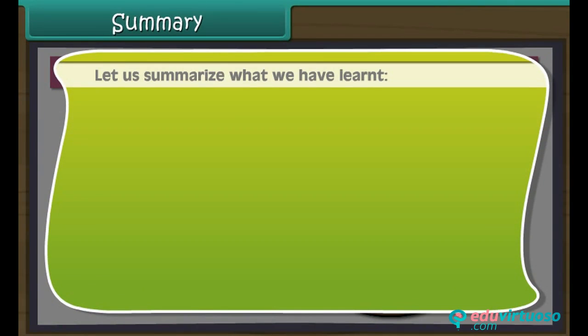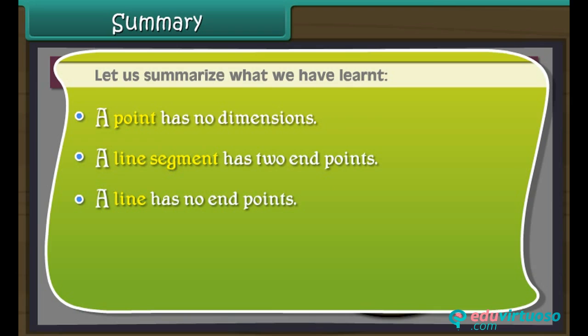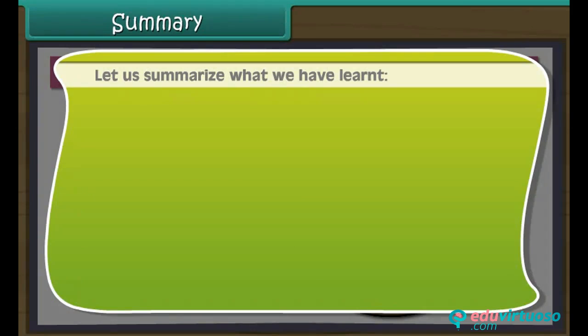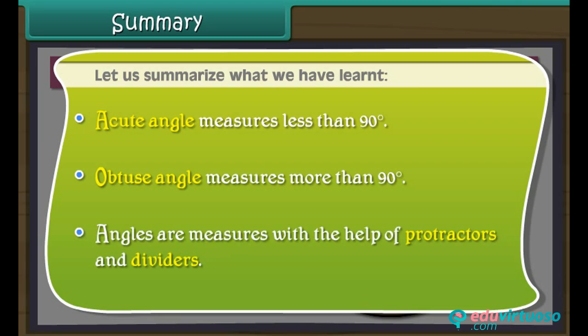Let us summarise what we have learnt. A point has no dimensions. A line segment has two end points. A line has no end points. A right angle measures 90 degrees. An acute angle measures less than 90 degrees. An obtuse angle measures more than 90 degrees. Angles are measured with the help of protractors and dividers.